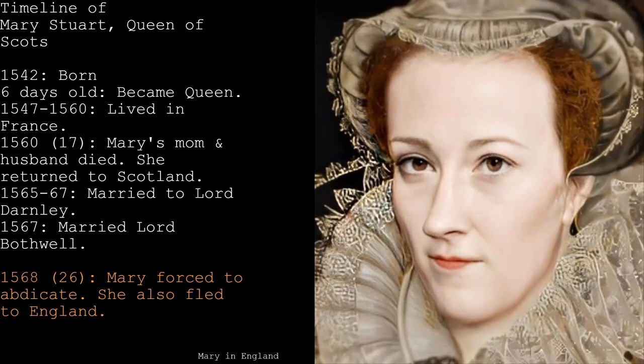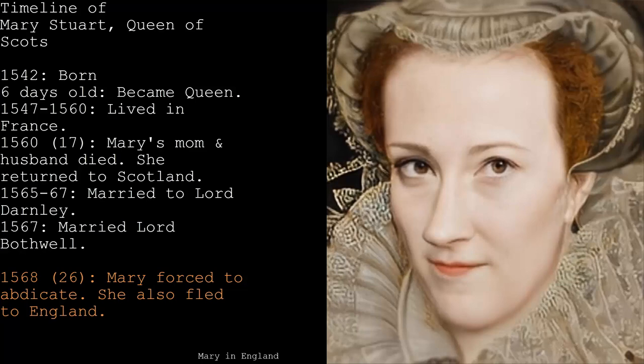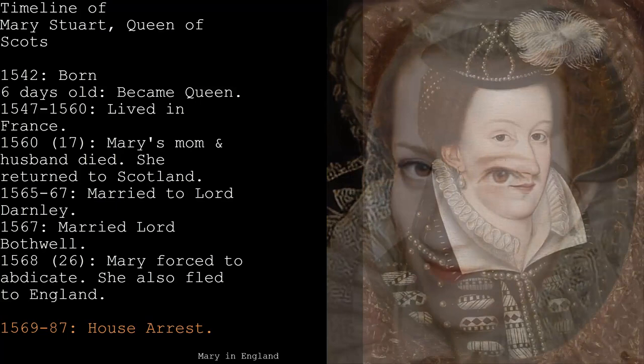Elizabeth's advisors urged her to execute Mary as quickly as possible, putting Elizabeth in a bind: if she didn't execute her, the threat remained; but if she did, the dramatic nature of it could lead to the end of her own reign. Mary was kept under house arrest for 18 years.